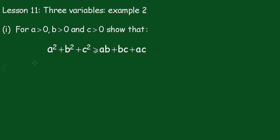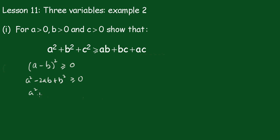We'll start with (a minus b) all squared being greater than or equal to 0. Removing those brackets, we get a squared minus 2ab plus b squared is greater than or equal to 0. That is, a squared plus b squared is greater than or equal to 2ab.